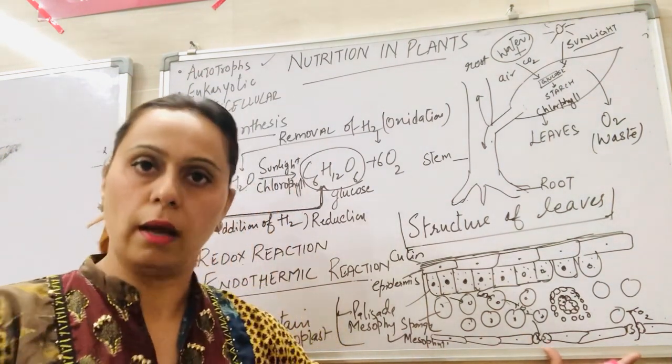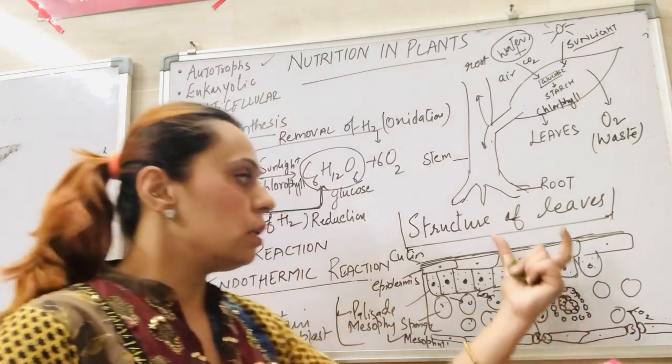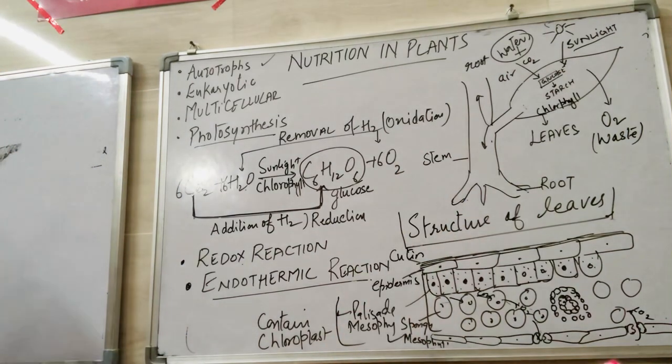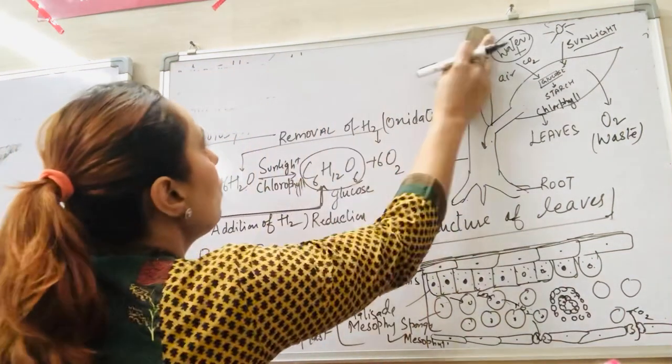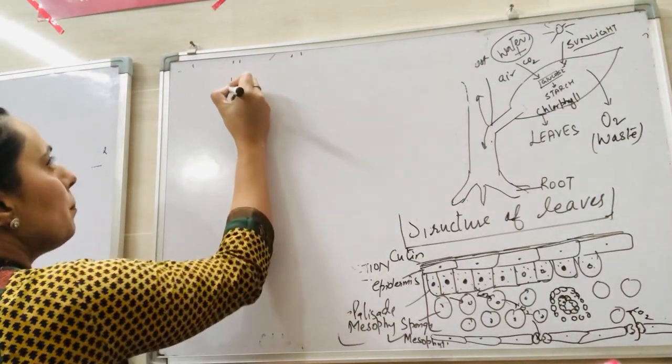So this is actually the structure of leaf. If we want to make it simple, a little more simple, we can do it in this flow chart manner like the upper layer.